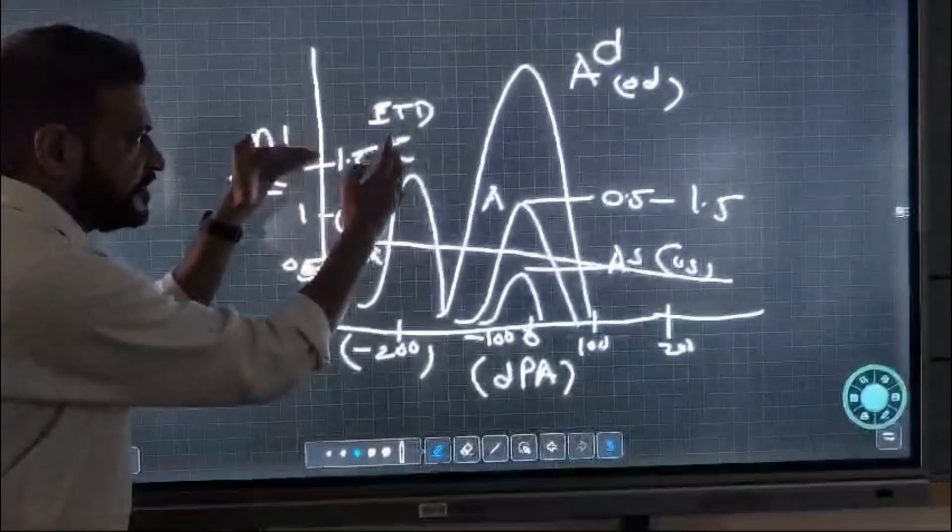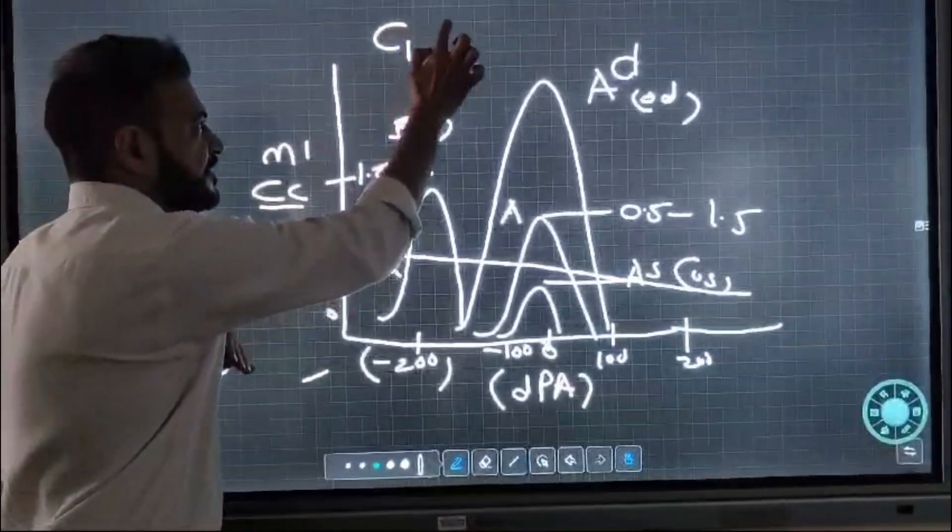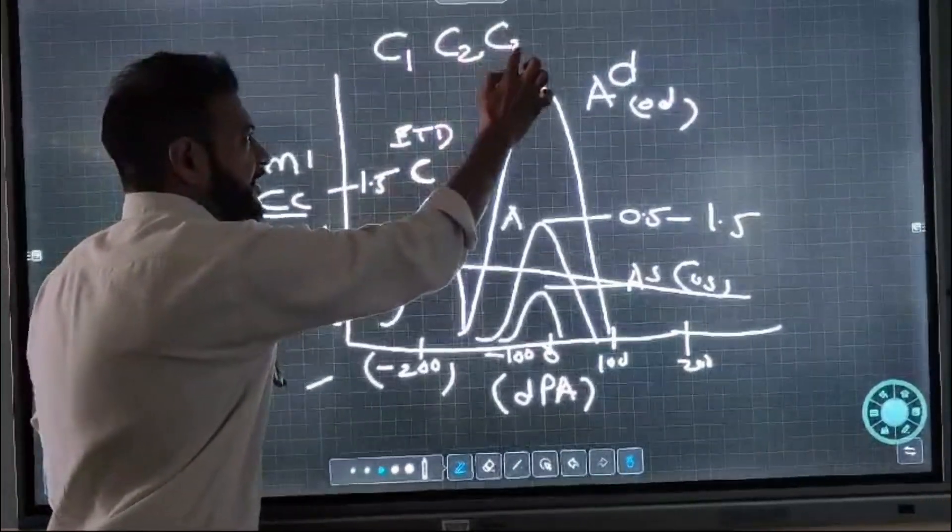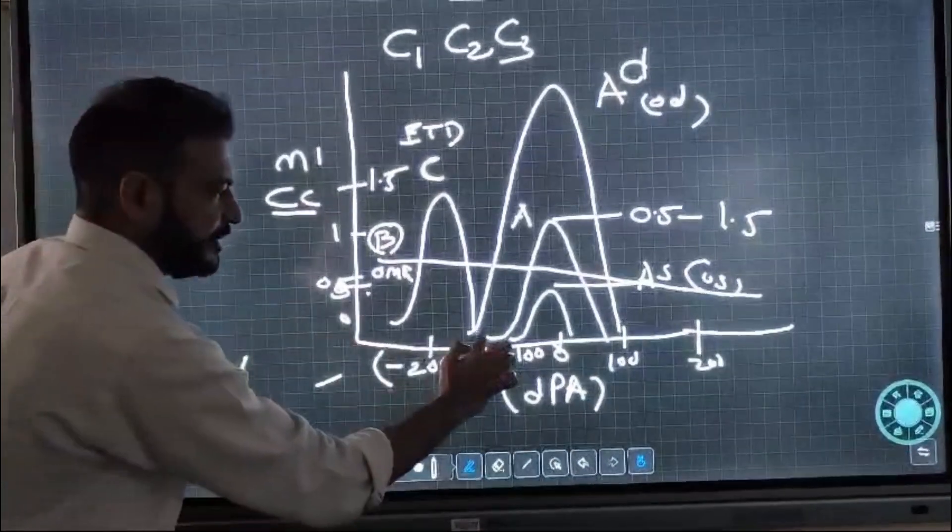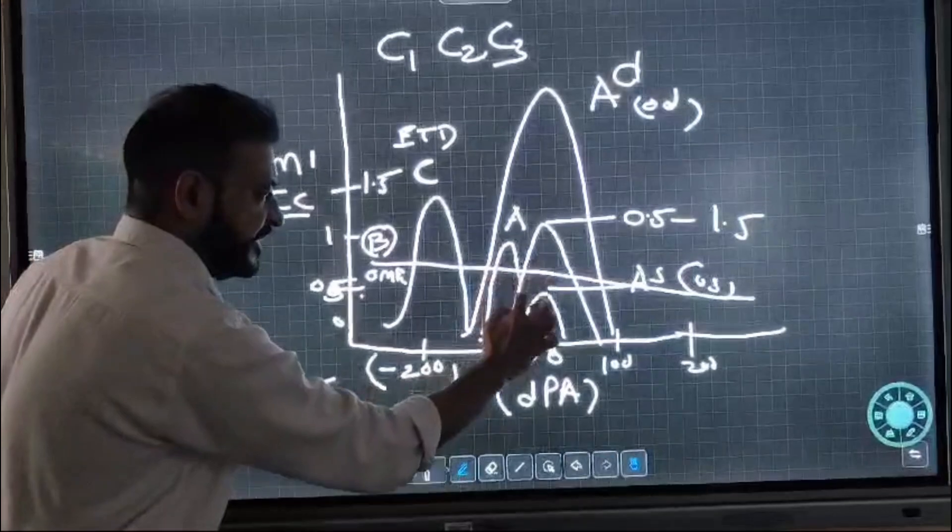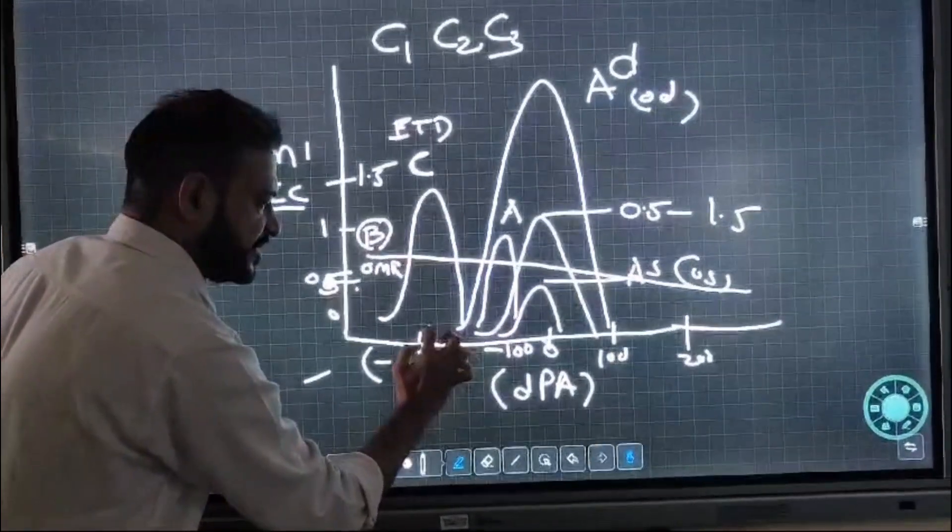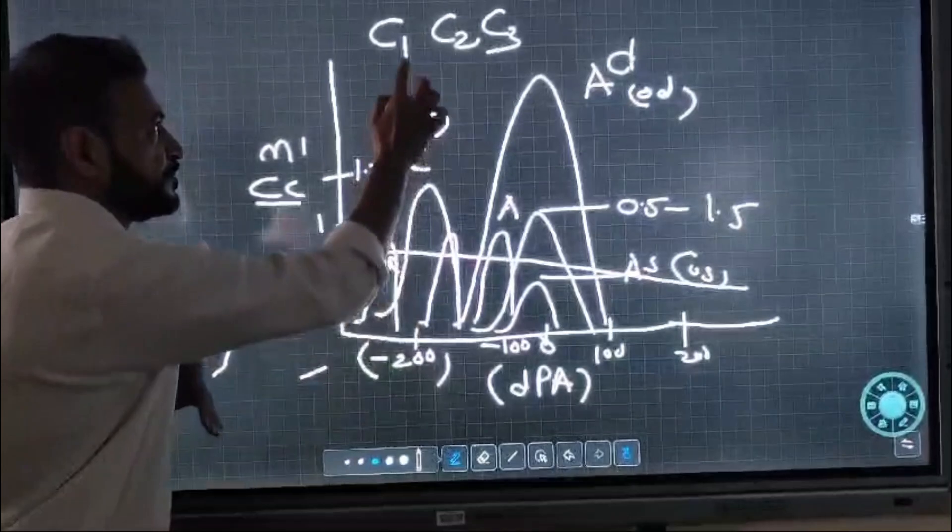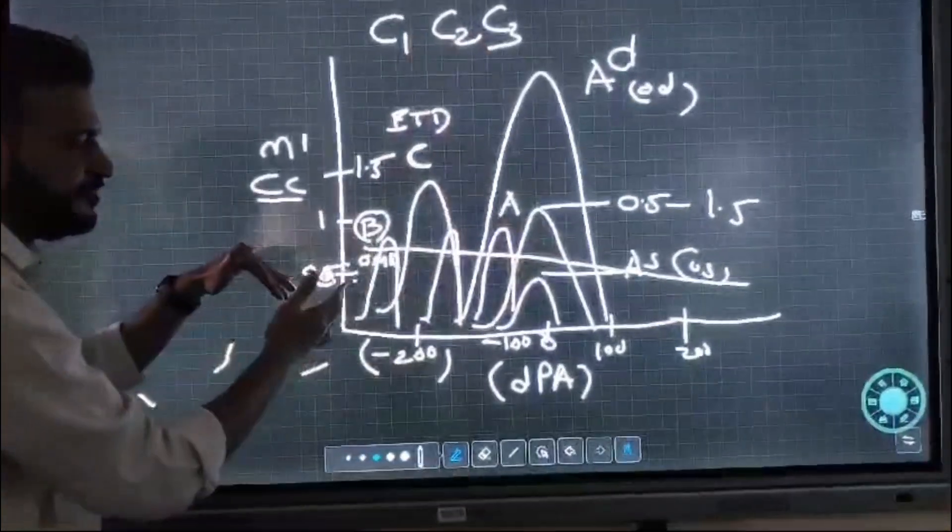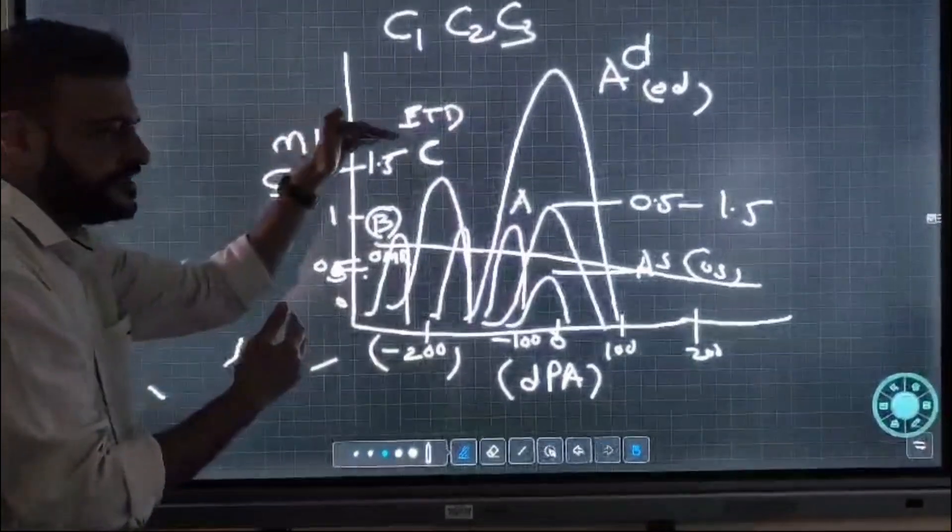Type C curves are divided into C1, C2, and C3 based on how negative the pressure is. At minus 100 decapascals, it is C1. At minus 200, it is C2, and at minus 300, it is C3.